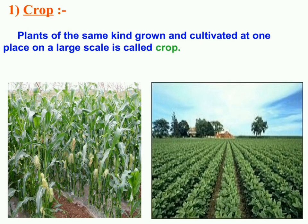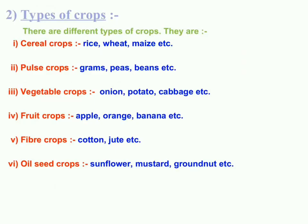When plants of the same type are grown and cultivated in a field at large scale, it is called a crop — like wheat crop, paddy crop, etc. There are different types of crops: cereal crops, for example rice and wheat; pulse crops like gram and peas; and vegetable crops like onion and potato.